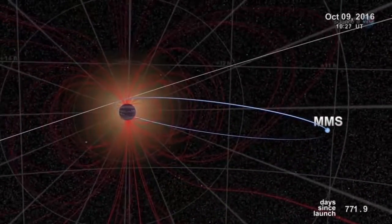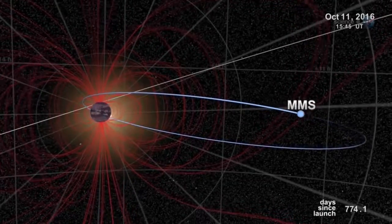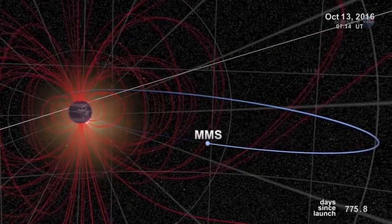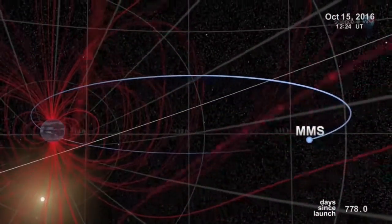Just one problem. Finding them. Magnetic portals are invisible, unstable, and elusive. They open and close without warning, and there are no signposts to guide us in, notes Scudder.